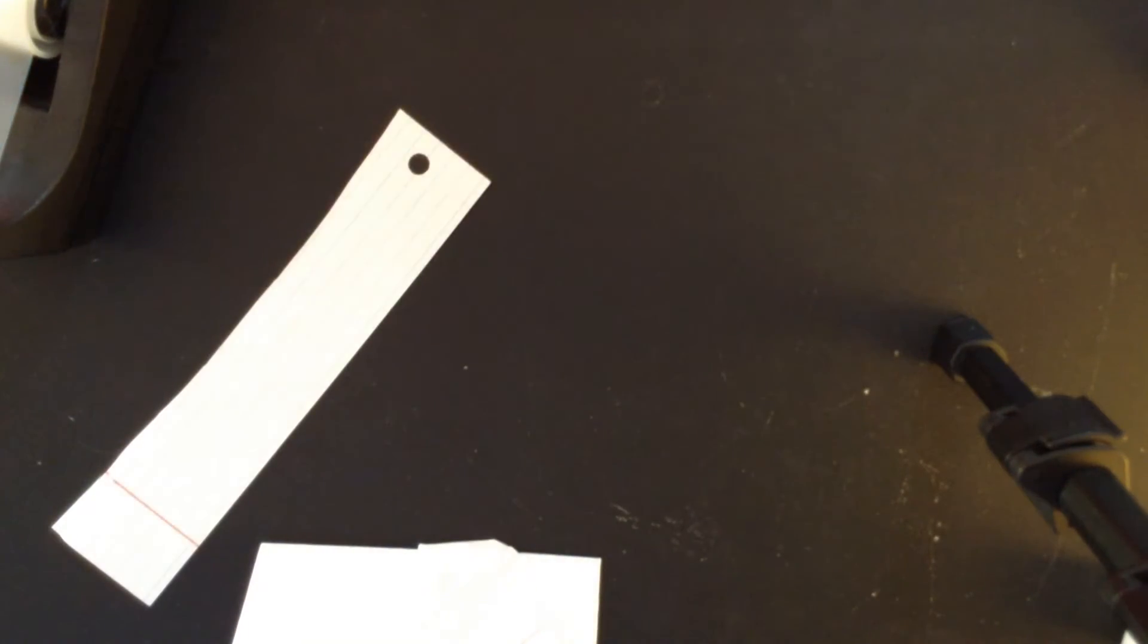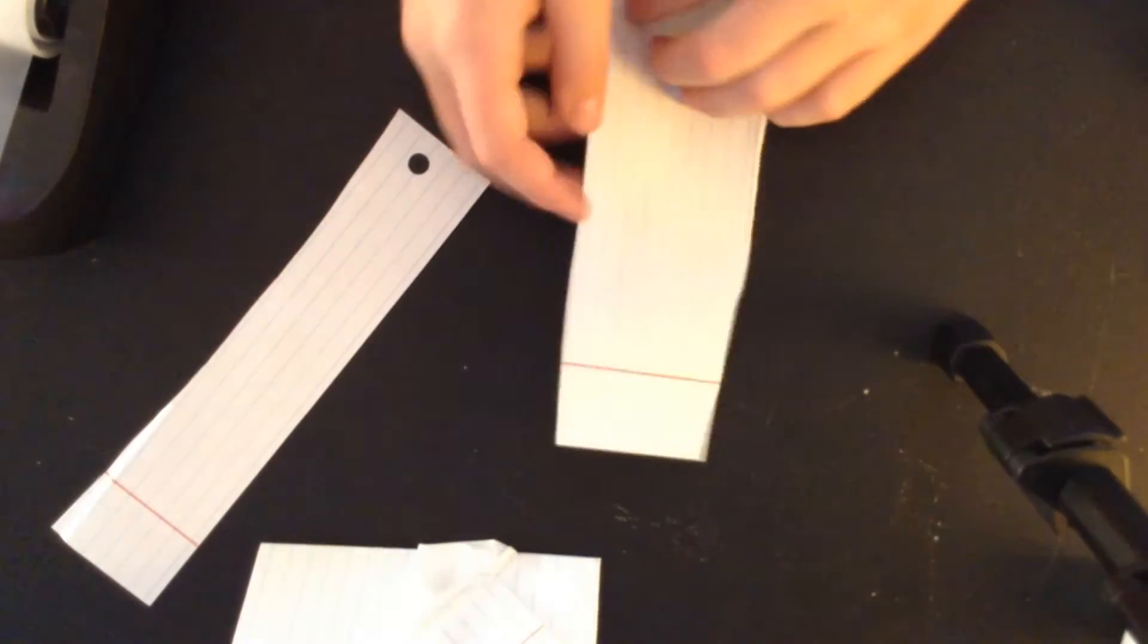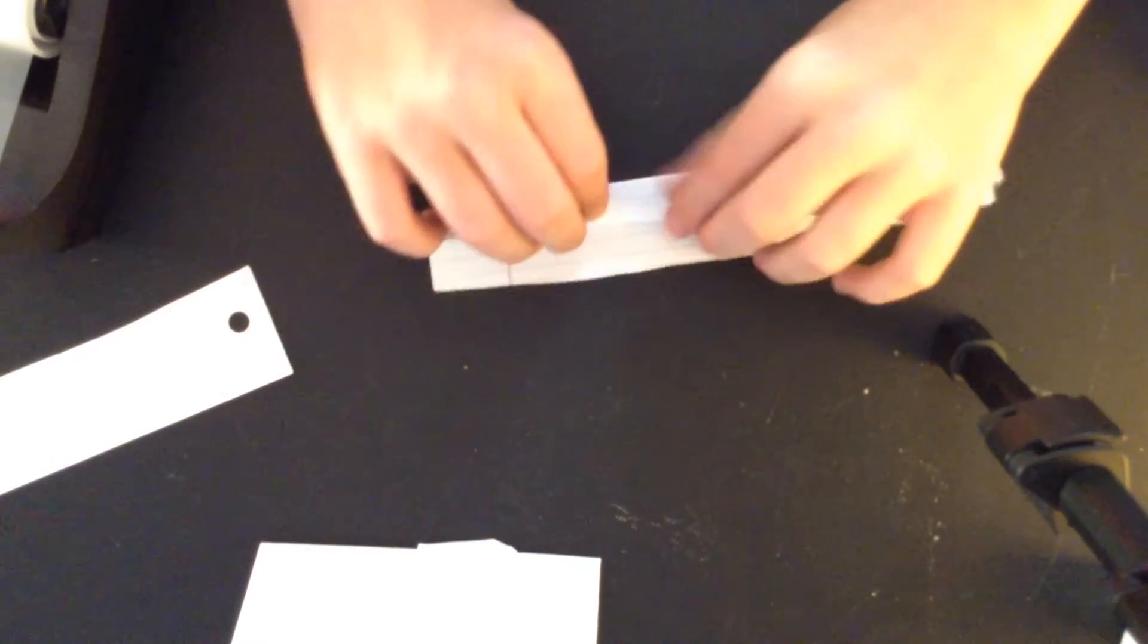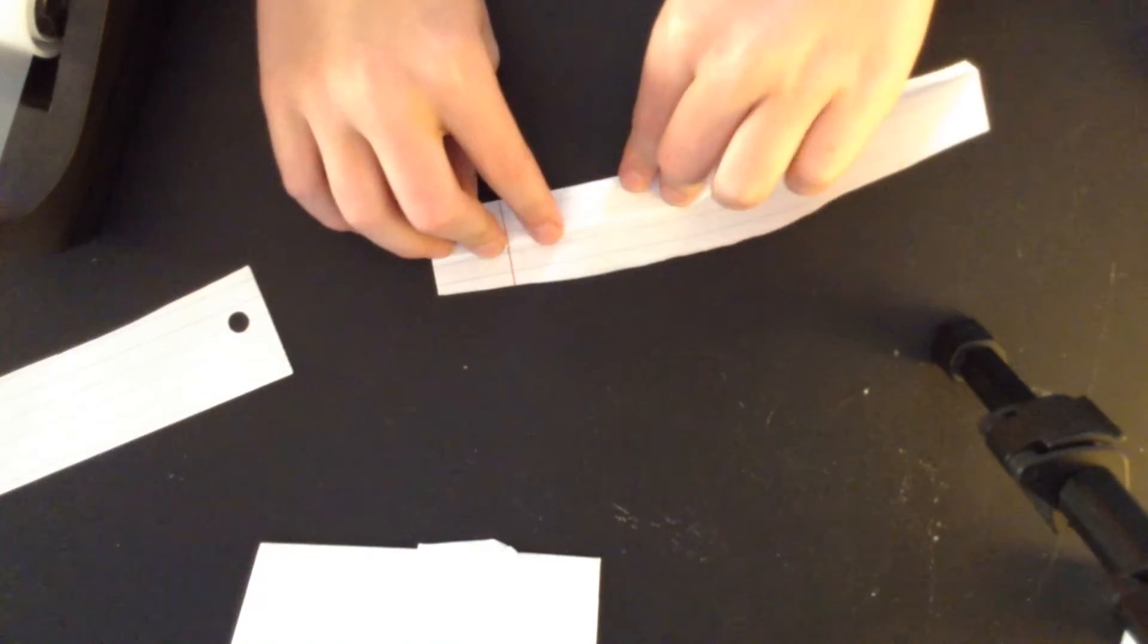Like that. Alright, so once you're done with that, you're going to get another piece of paper. So and then once you're done with that, you want to fold it in half. And then what you want to do is fold both sides like that, and do the same with the other side.